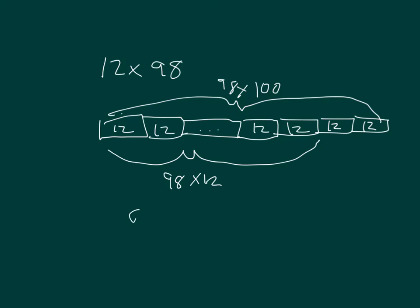So we take 98 times 100, which is 9,800, and then we subtract 2 12s. 2 12s is 24. That's 9,776.